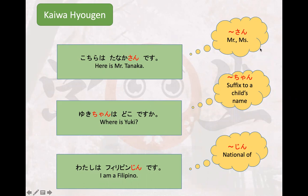We have three kaiwa yogen. The first one is the suffix 'san,' which means Mr. or Miss. The second is the suffix 'chan,' used to attach to a child's name — both girl or boy. And the third is the suffix 'jin,' which indicates nationality.